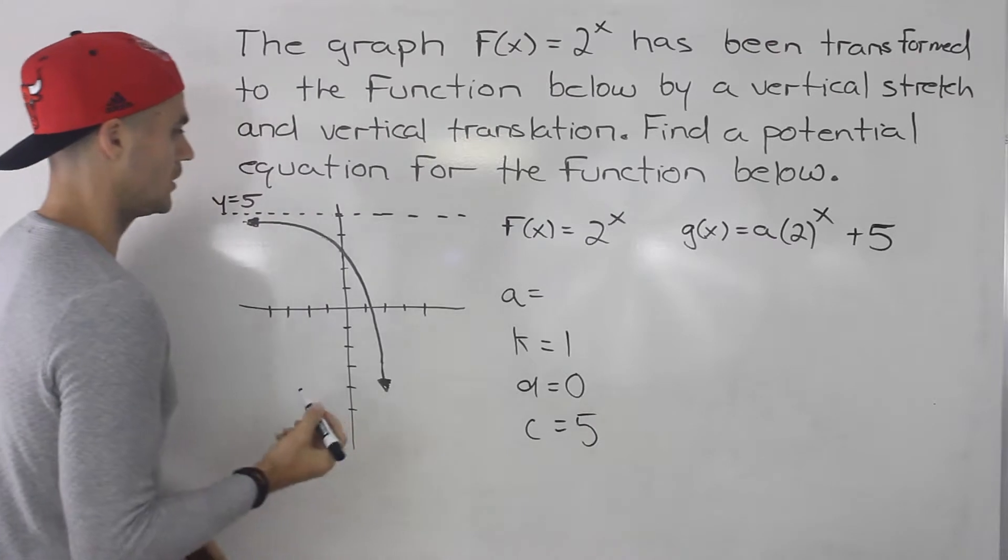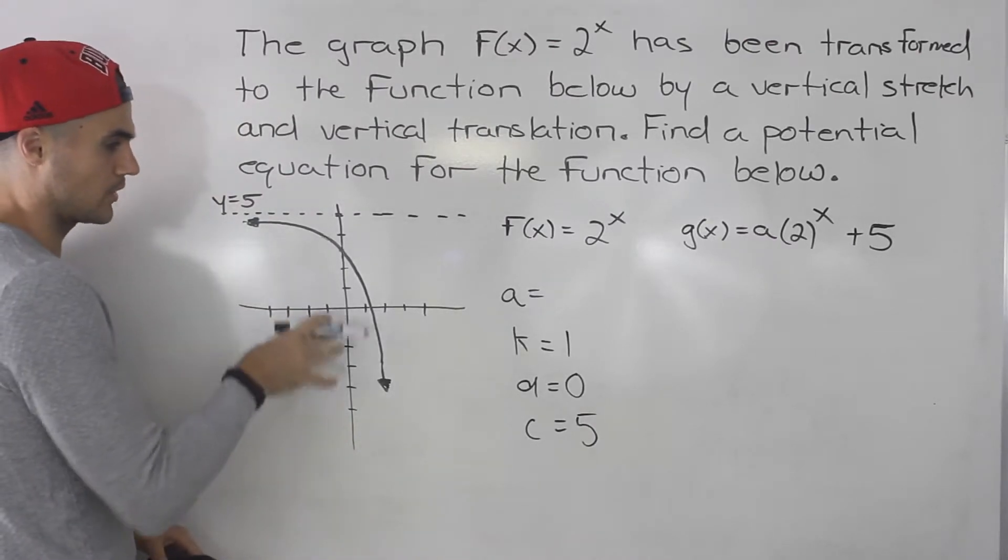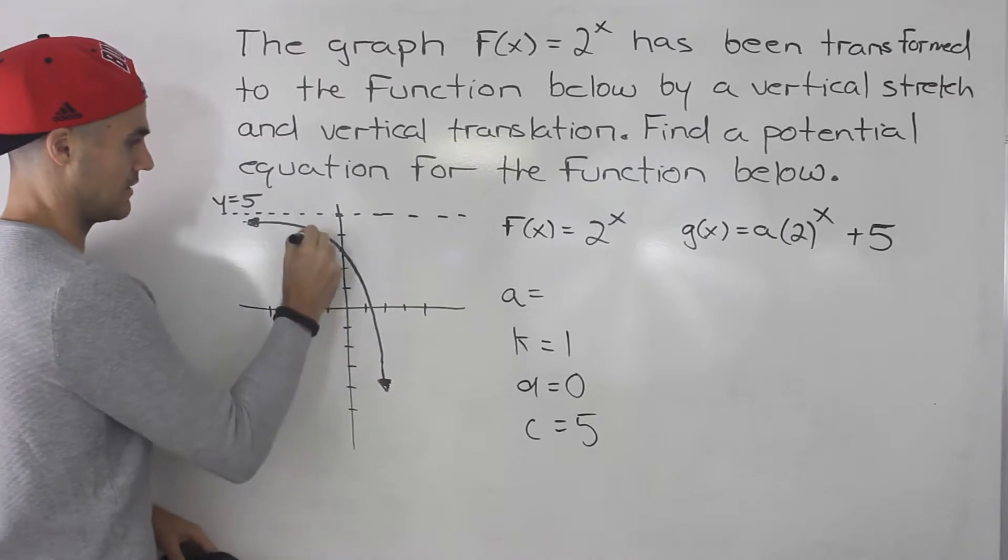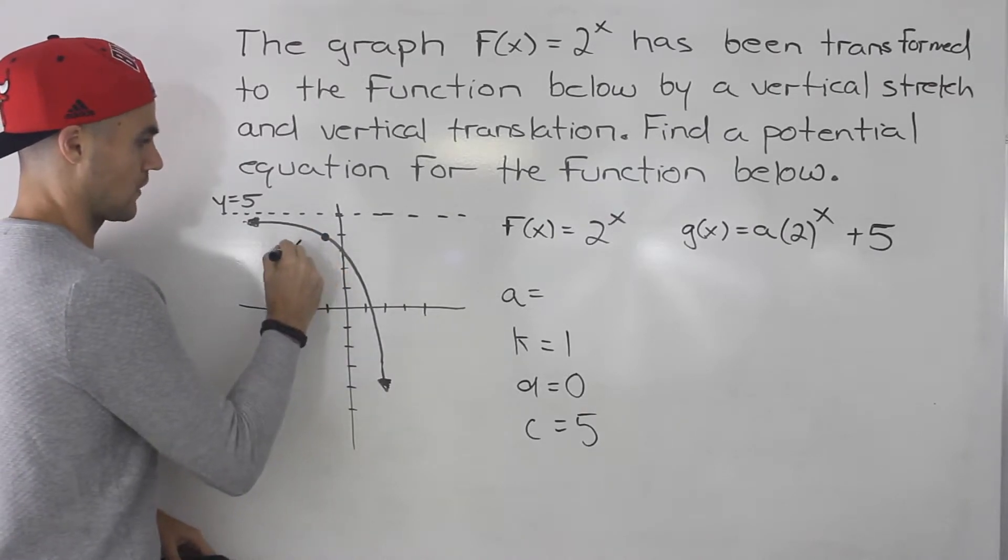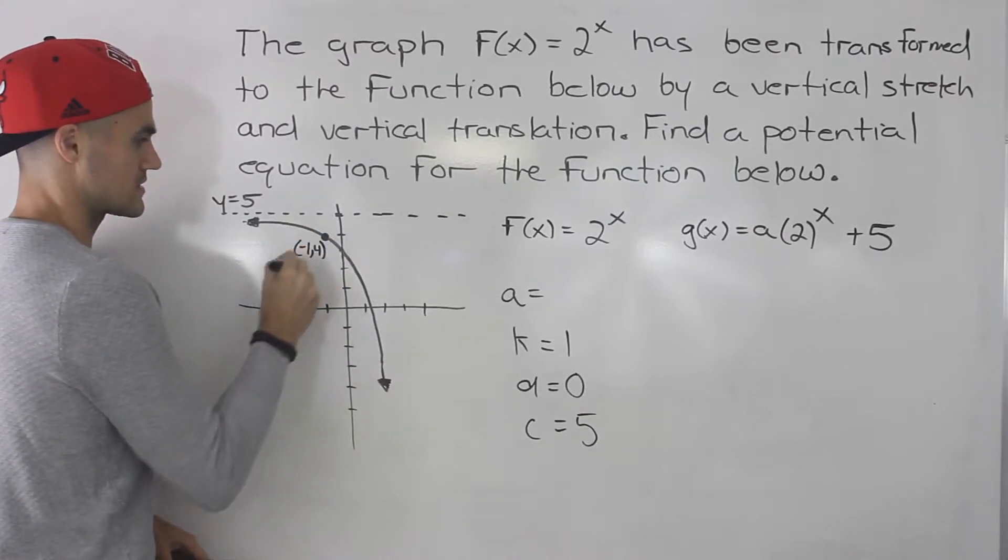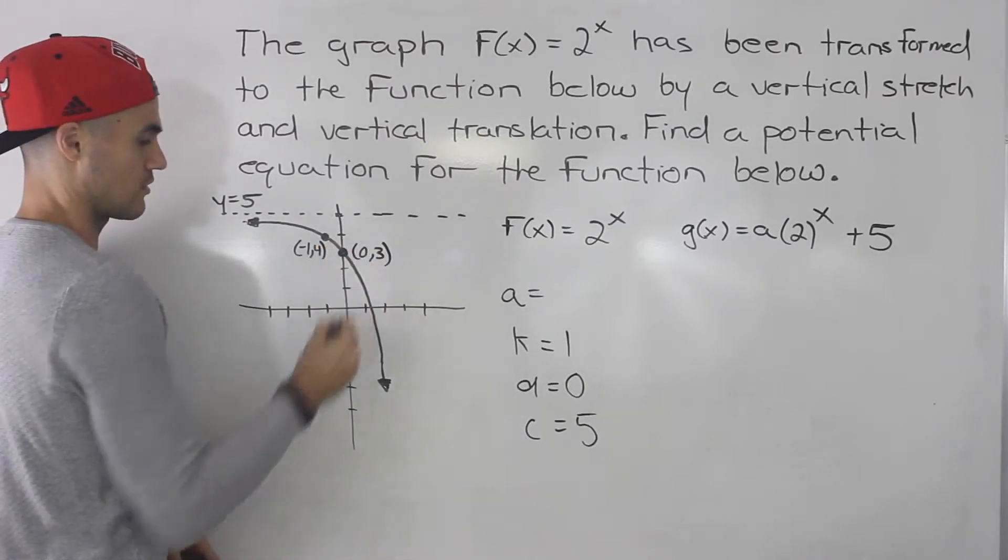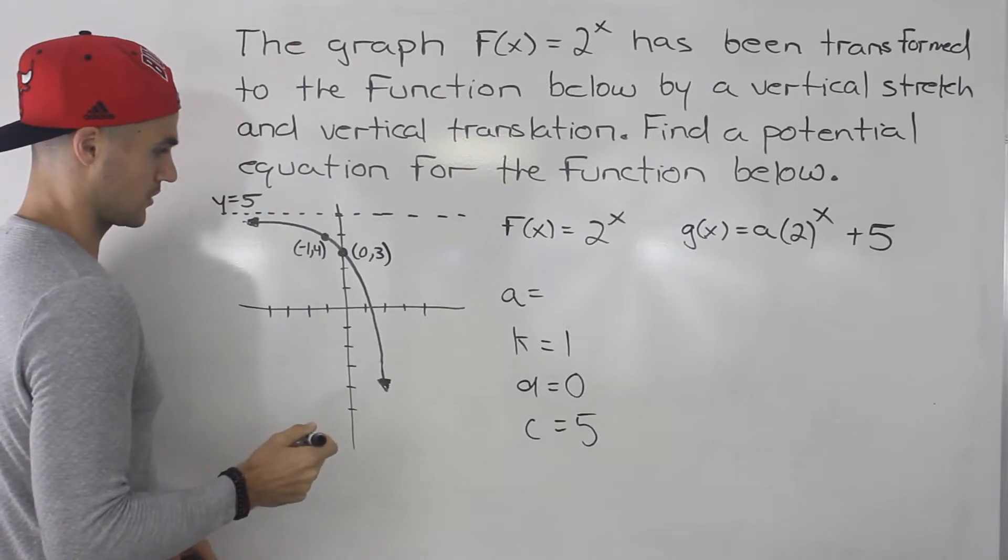Now, how can we do that? Well, what you can do is you could pick points on the graph. So you want to pick points that are smooth here. So notice that (-1, 4), that's one point. That's fairly obvious. There's an intercept here at (0, 3).